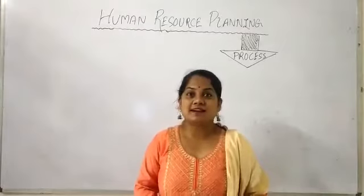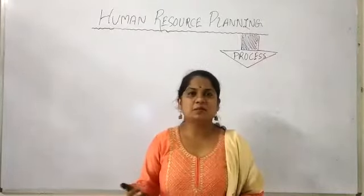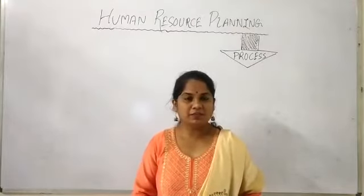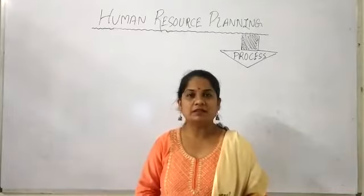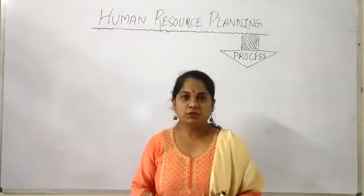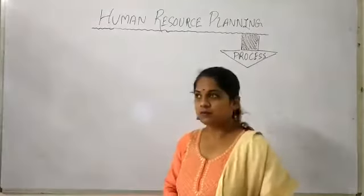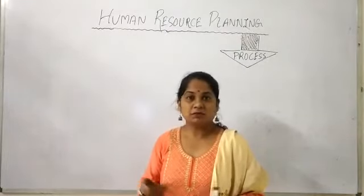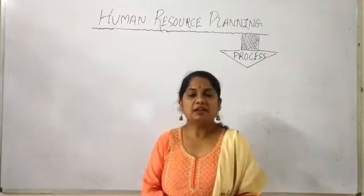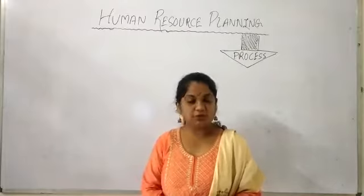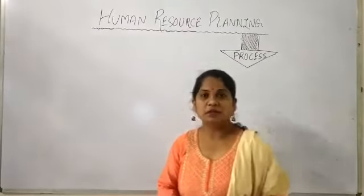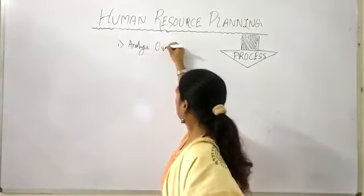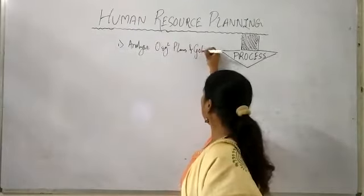Friends, when does this process start and how does it start? If there is a person A who wants to start his business, the first thing you will have to see is what is the plan — where you want to go in the next 3, 5, or maybe 10 years. He will have some plans divided into short-term objectives and goals. These plans will be achieved with the help of some resources, and that is where our process of human resource planning starts. So the first stage is: analyze organizational plans and goals.